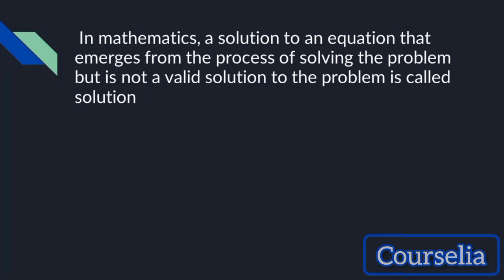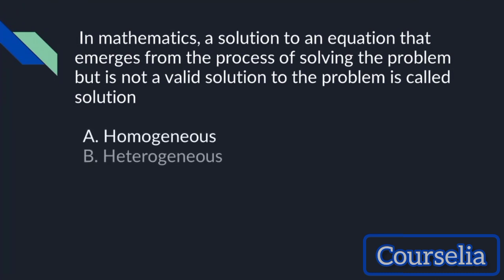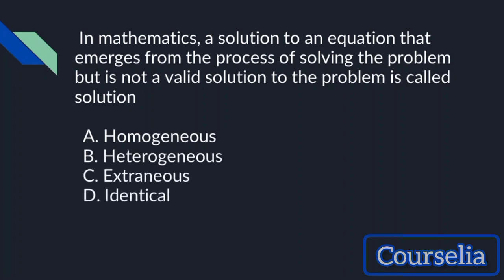In mathematics, a solution to an equation that emerges from the process of solving the problem but is not a valid solution to the problem is called a dash solution. Options: A. Homogeneous, B. Heterogeneous, C. Extraneous, D. Identical. The answer is Extraneous.